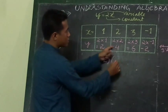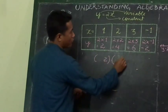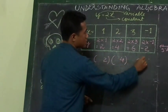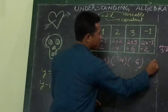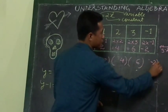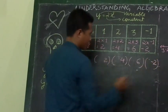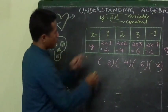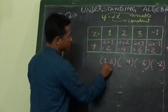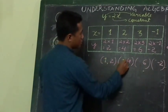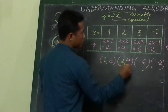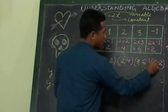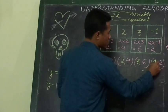So when x is 1, y is 2; x is 2, y is 4; x is 3, y is 6; and x is minus 1, y is minus 2.